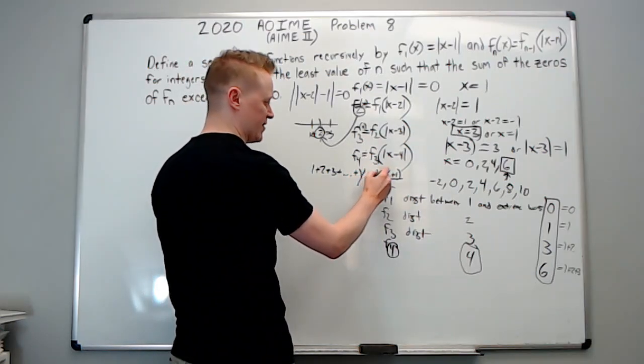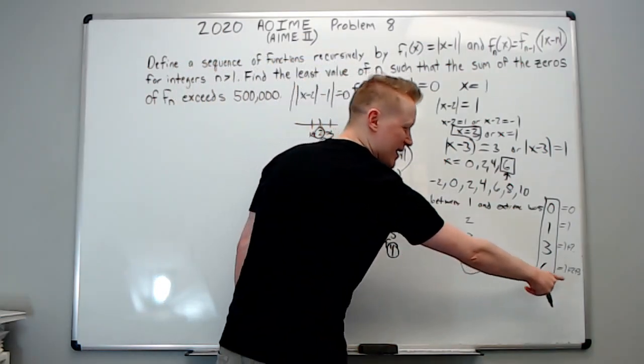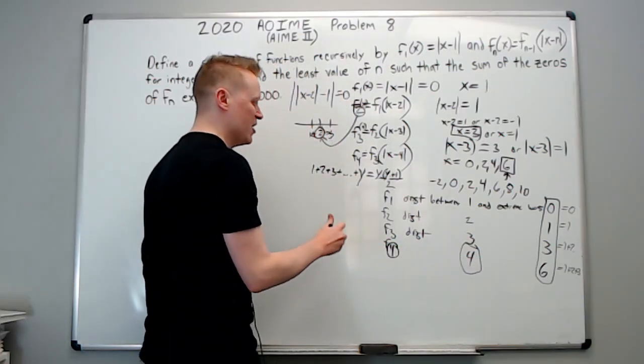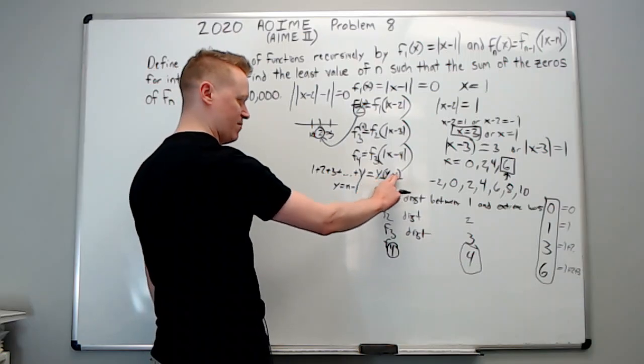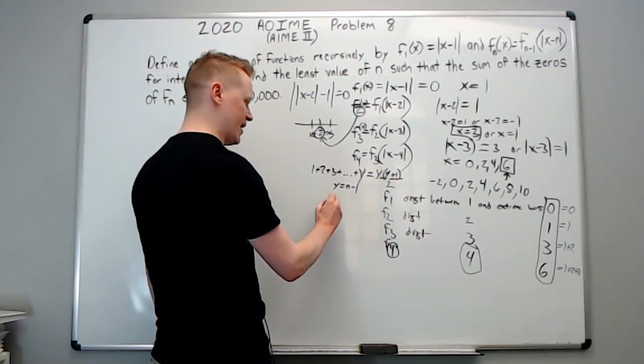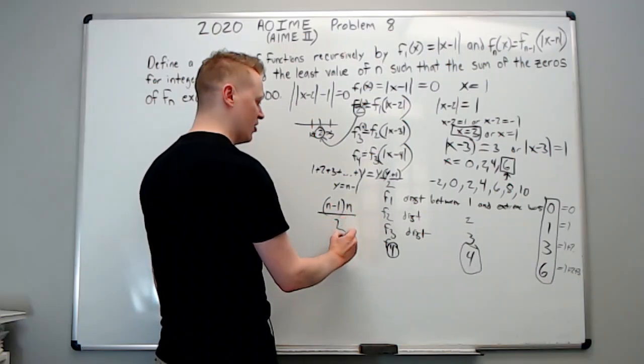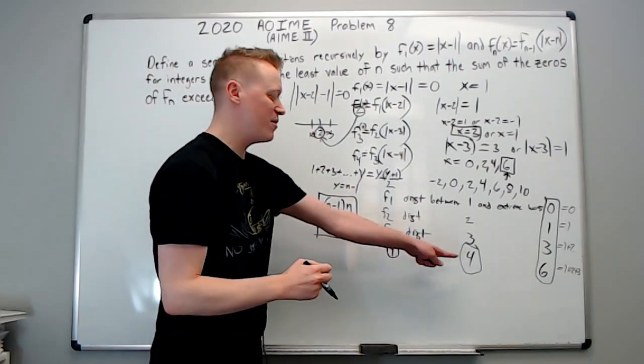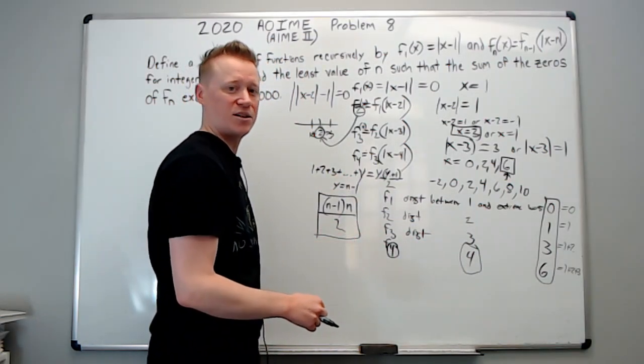So, what is y? y is this number, which is one less than this number, and this number is n. So, I'm going to let y equal n minus one. You're just going to plug n minus one into here to get n minus one times n minus one plus one, which is n, over two. This represents the distance away from n that the smallest zero and largest zero is.